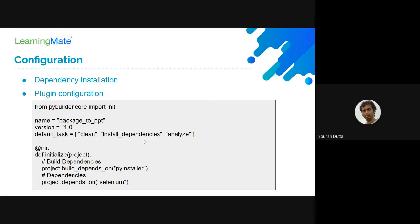Some tasks include clean, which cleans out your build folder. Then there's dependency installation, then compiling the code, then different analysis including verification, linting, and unit test runs. The @init decorator is where you mention build-related configuration. You can configure default tasks, project information, and dependencies. For example, build-time dependencies use project.build_depends_on, and runtime dependencies use project.depends_on — like selenium for a web scraping application.